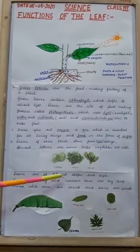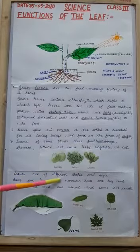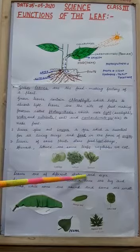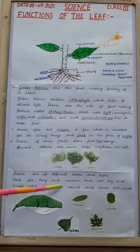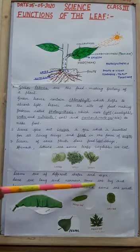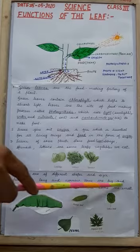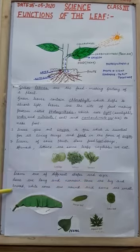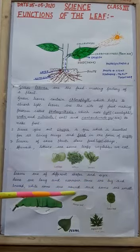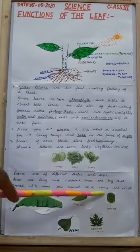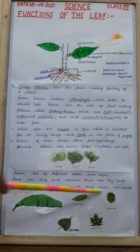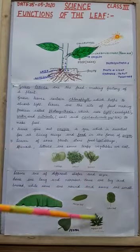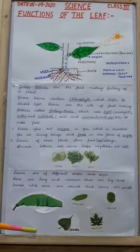Leaves are of different shapes and sizes. Some are long and narrow, some are big and broad, while some are round and some are small.